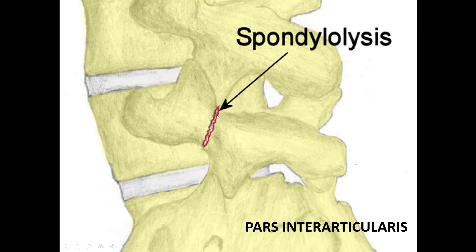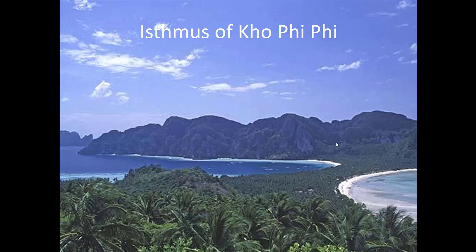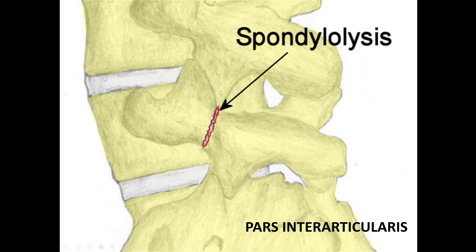The fracture is between the facet above and the facet below — it's the place of the pars between the joints. This is a joint where two bones come together, and you have a fracture right here. This same part of the spine is called the isthmus — a narrow area that connects two large masses, like the Isthmus of Panama connecting two large areas of land. That's why they call it the isthmus of the spine.